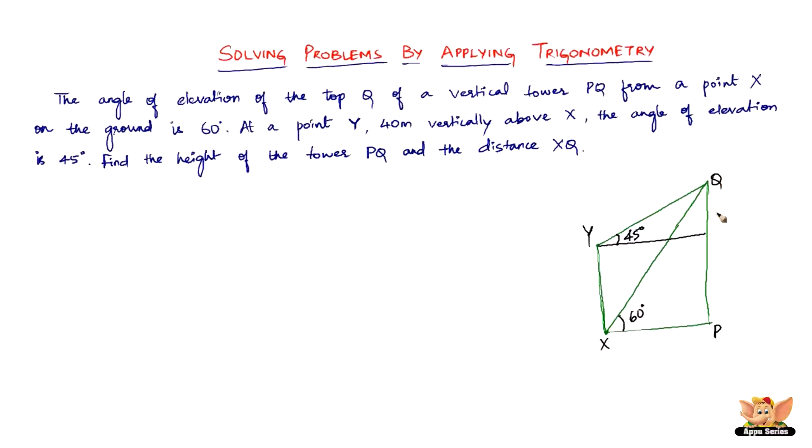Now we need to find the height of the tower PQ and the distance XQ. We need to find XQ and PQ. So it's as simple as that. Now we know that this is 40 meters, so this is also going to be 40 meters. So we need to find PQ. Let's see what we can do with this. Let's get started now with the problem. Let's name this point R here.